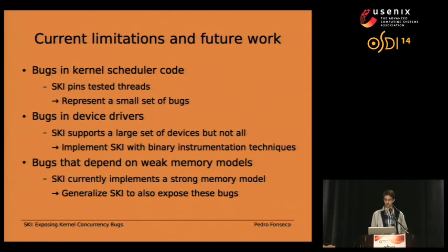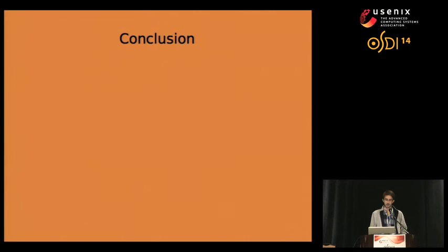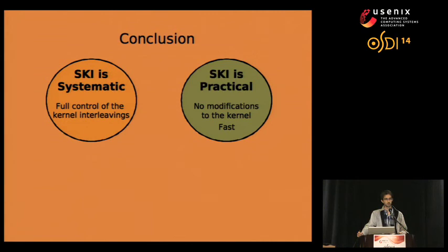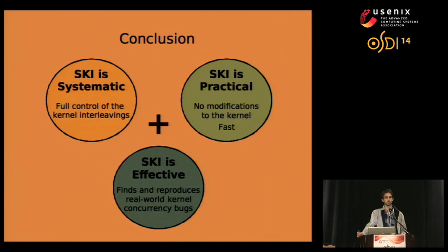In conclusion, Ski is systematic in that it picks the interleavings it chooses on each execution. It is also a practical tool because it does not require modifications to the kernel and is fast given all the optimizations we've implemented. We've also shown that Ski is effective since it is able to find and reproduce real-world concurrency bugs. I'd be happy to take questions now.